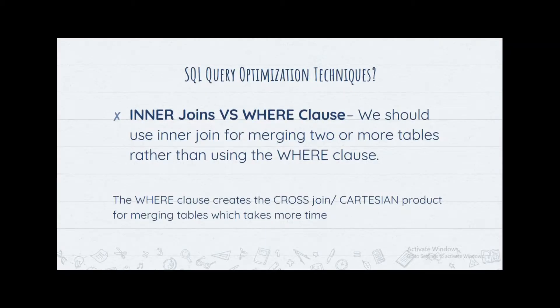We also have INNER JOINs versus WHERE clauses. You should use INNER JOINs when merging two or more tables rather than using the WHERE clause. The WHERE clause creates a cross join, raising potential Cartesian products when merging tables and usually taking much more time. Using INNER JOIN makes things simpler and faster than using the WHERE clause.